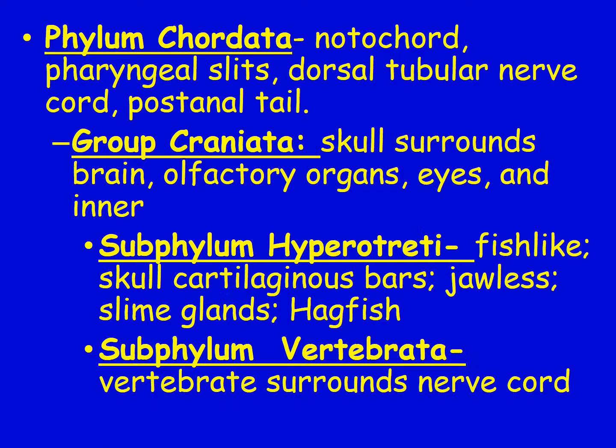We're looking at phylum Chordata — this is where fish belong. Just like all chordates, they have a notochord, pharyngeal gill slits, a dorsal tubular nerve cord, and a post-anal tail. There's also a group — not really part of formal classification, but used to help categorize — and all organisms in this group have a skull that surrounds their brain, olfactory organs for sense of smell, eyes, and inner ears.